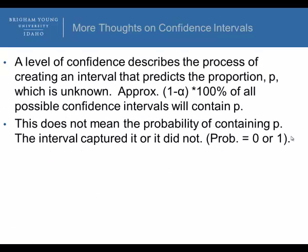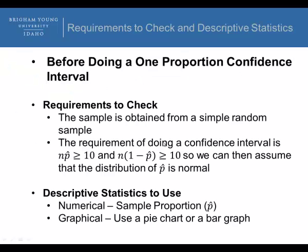Here is a couple more thoughts here. A level of confidence describes a process of creating an interval that predicts the proportion P, which is unknown. So, approximately 1 minus alpha times 100% of all possible confidence intervals would contain P. So, if we did a 95% confidence interval, if we did a confidence interval a gazillion times, we should capture that true proportion about 95% of the time. This does not mean the probability of containing P. The interval either captured or did not. It's either 0 or 1, the probability of containing it. This statement here describes the process of capturing the true mean. This here is, after all is said and done, what's the probability of containing or capturing the true population proportion?